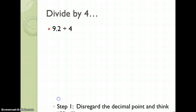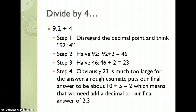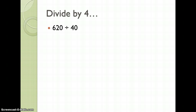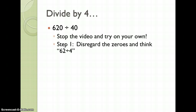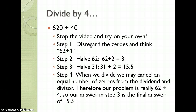Let's try 9.2 divided by 4. First we're going to disregard the decimal point and think 92 divided by 4. Halve 92 to get 46, then halve 46 to get 23. However, 23 is much too large for the answer. A rough estimate would put our final answer to be about 10 divided by 5 equals 2. Therefore, we need to add a decimal point to our final answer in step 3, so our final answer should be 2.3. For 620 divided by 40 — stop the video and try on your own. Disregard the zeros and think 62 divided by 4. Halve 62 to get 31, then halve 31 to get 15.5. When we divide, we know we may cancel an equal number of zeros from the dividend and the divisor. Therefore, our problem is really 62 divided by 4, and the answer in step 3 is in fact the final answer: 15.5.